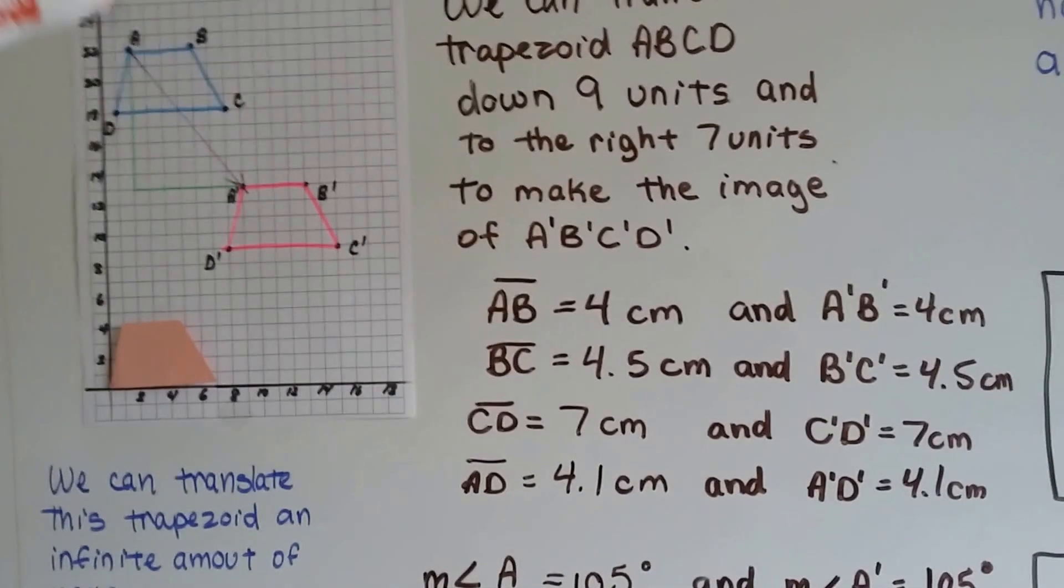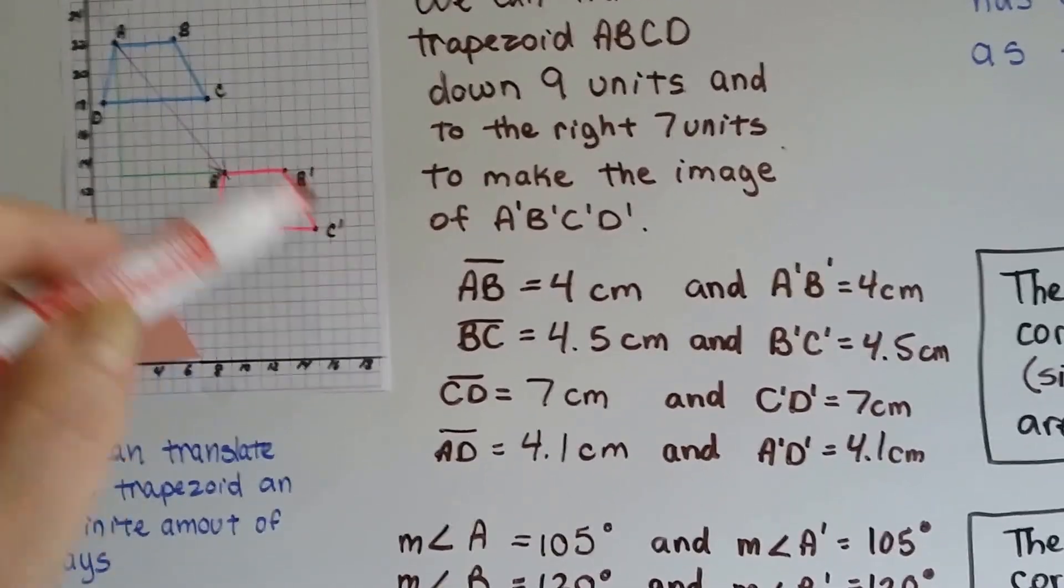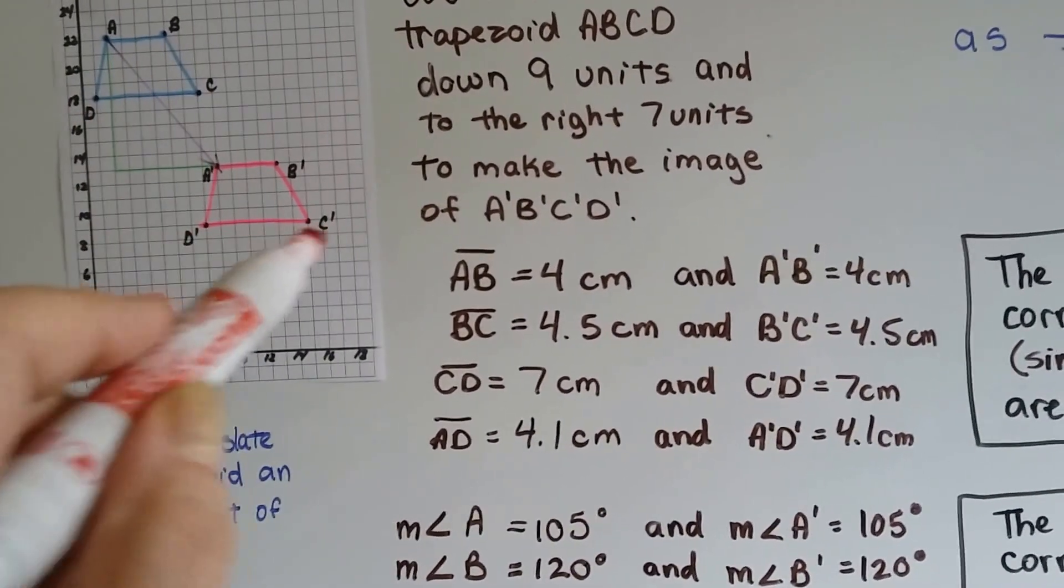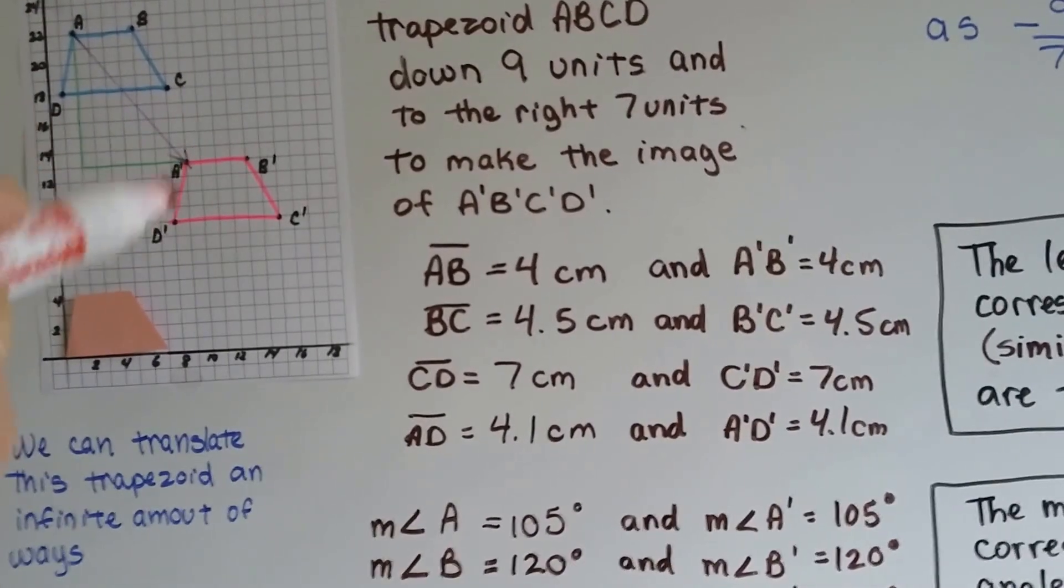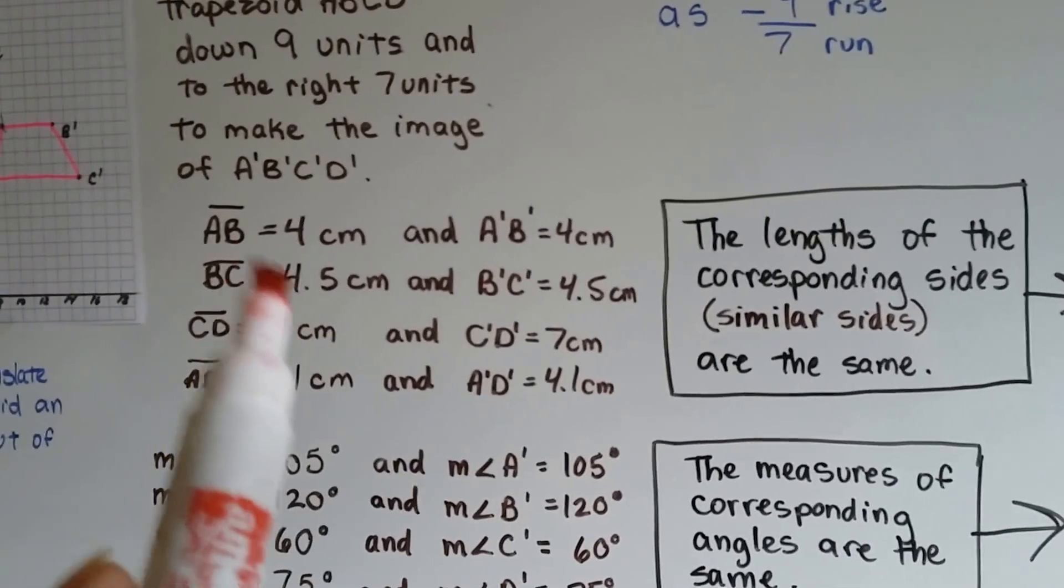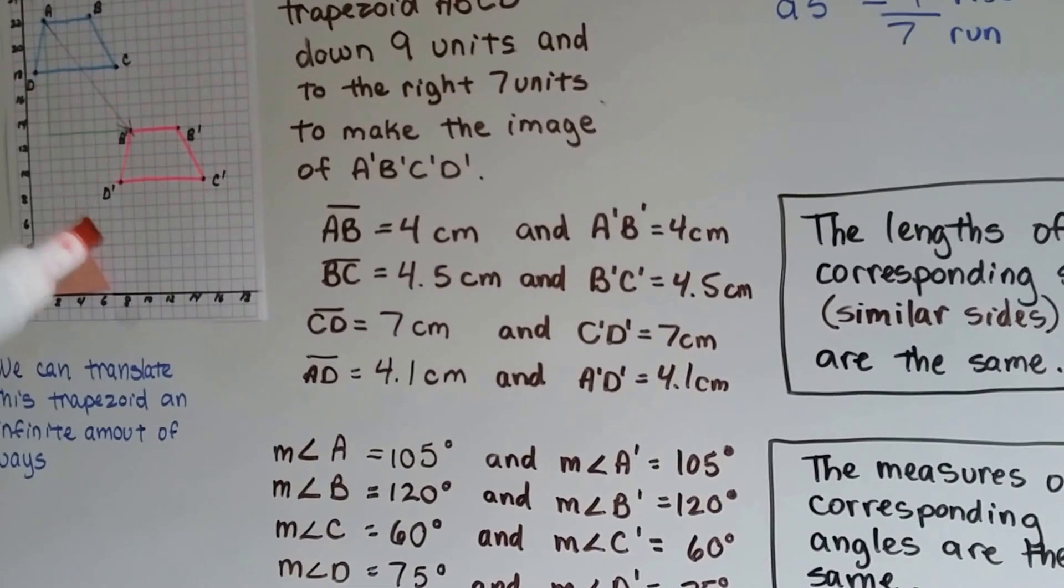BC is 4.5 centimeters and B prime C prime is 4.5 centimeters. CD is 7 centimeters and so is C prime D prime. Line AD is 4.1 centimeters and so is A prime D prime. The lengths of the corresponding sides, the similar sides, are the same. They're identical.